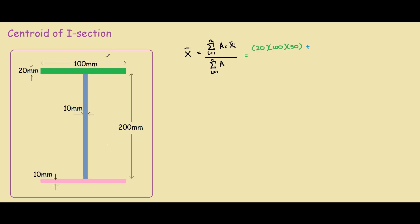Now we have the blue part, the area is 200x10, and the centroid of the blue bar is 50.